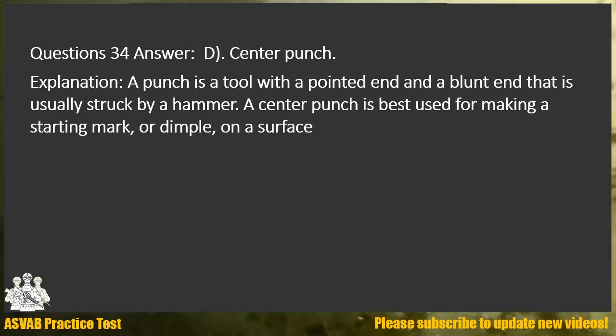Answer D. Center punch. Explanation: A punch is a tool with a pointed end and a blunt end that is usually struck by a hammer. A center punch is best used for making a starting mark, or dimple, on a surface.